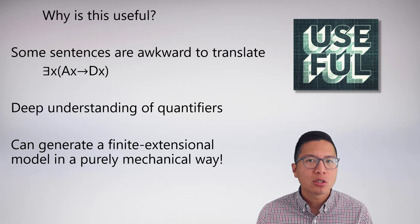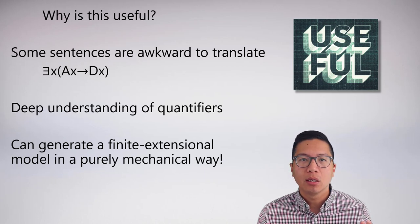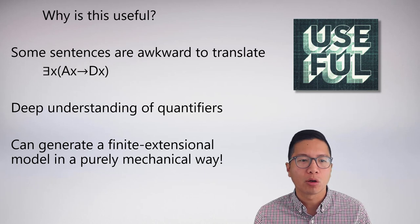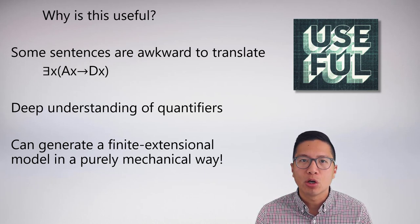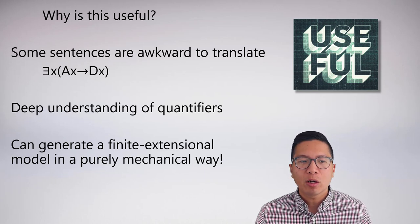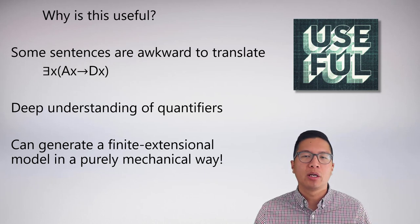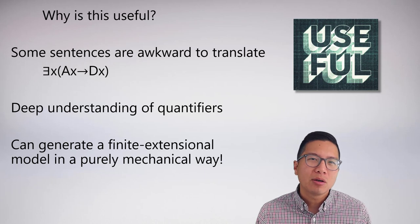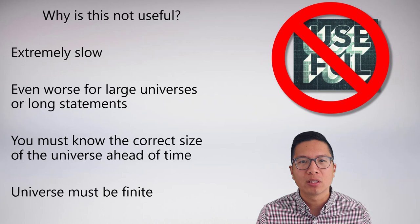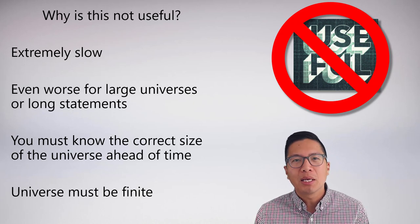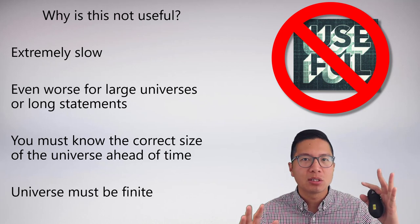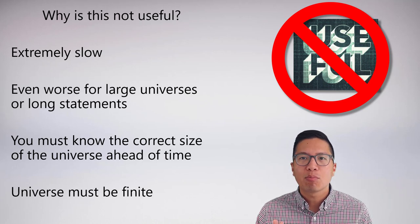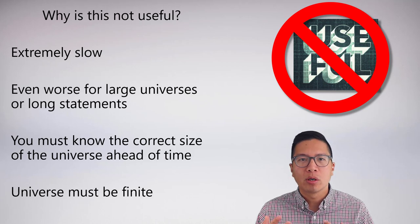Truth functional expansion is particularly useful when you have sentences that are awkward to translate—for example, 'there exists x, Ax arrow Dx,' which doesn't follow any canonical form. It also gives us a deep understanding of what quantifiers really mean, and the final payoff is that we can generate a finite extensional model in a purely mechanical way without relying on abstract translations and trial and error. However, truth functional expansion isn't nearly as useful as we might want: it's extremely slow, and it's brutal for large universes of discourse or really long statements—the same problems truth tables had in sentential logic.